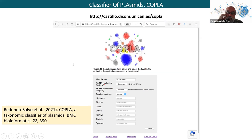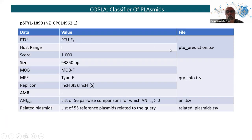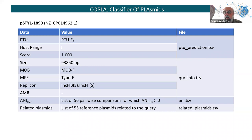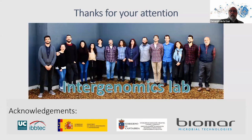In order to classify your plasmids, we developed a tool called COPLA. You upload the sequence of your plasmid and it gives you several output files: the PTU prediction, the host range score from 1 to 6, a quality score where over 0.9 is very good, the size of the plasmid, the MOB class, the MPF which tells you the family, the replicase formula using RepDB, the antimicrobial resistances found, and importantly the list of all connections of that plasmid — including those in the periphery of the PTU — to help in the analysis of your plasmid or project.